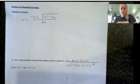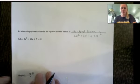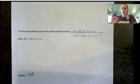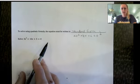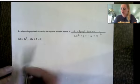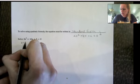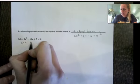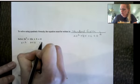When we use the quadratic formula, the very first thing we want to do is identify what a, b, and c are. It needs to be in standard form, set equal to 0. So here a is 3, b is 10, and c is 5.